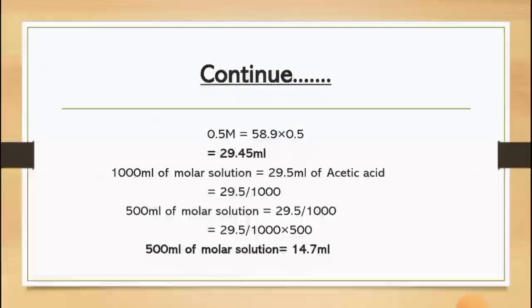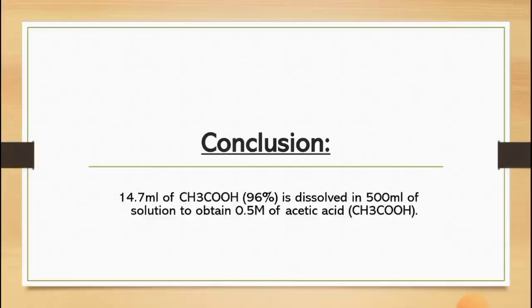That is the final conclusion of the experiment. Moving toward the next point, that is the conclusion or the result of the experiment. It is 14.7 ml of the acetic acid that purity is 96% is dissolved in 500 ml of the solution in order to get 0.5 molar of the acetic acid.